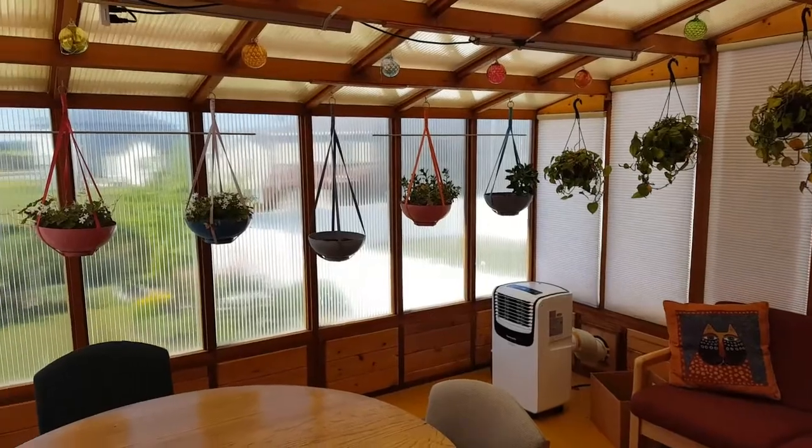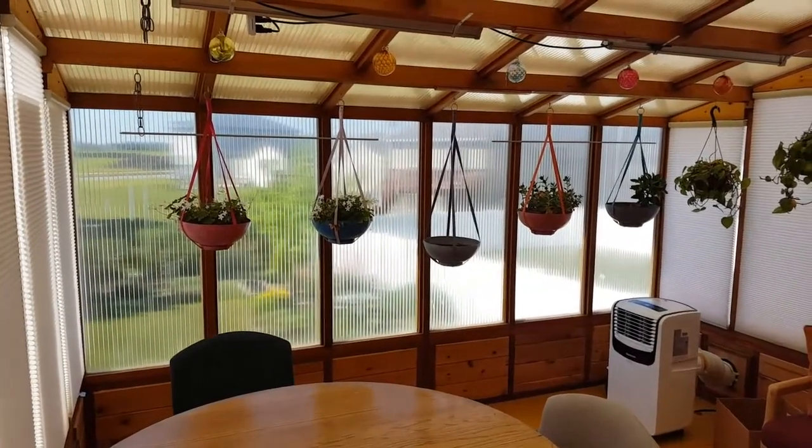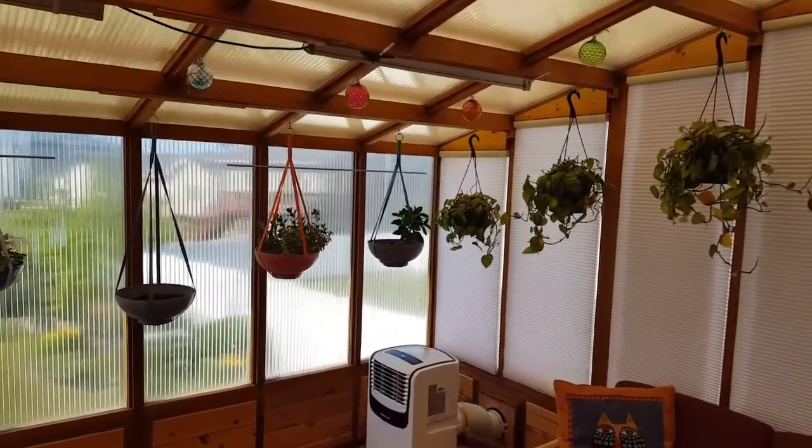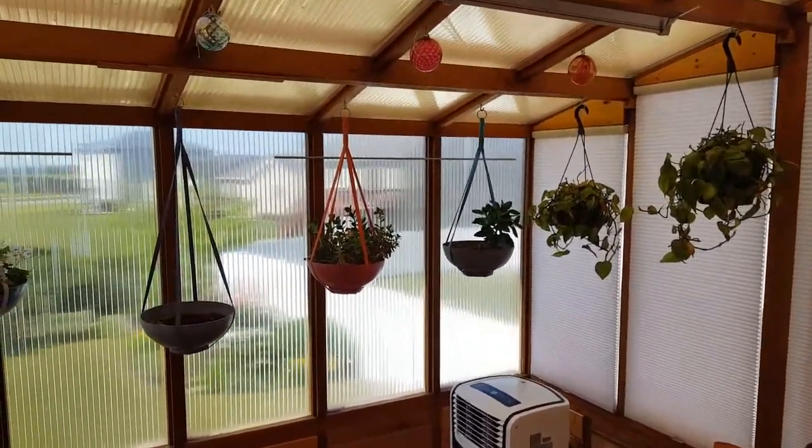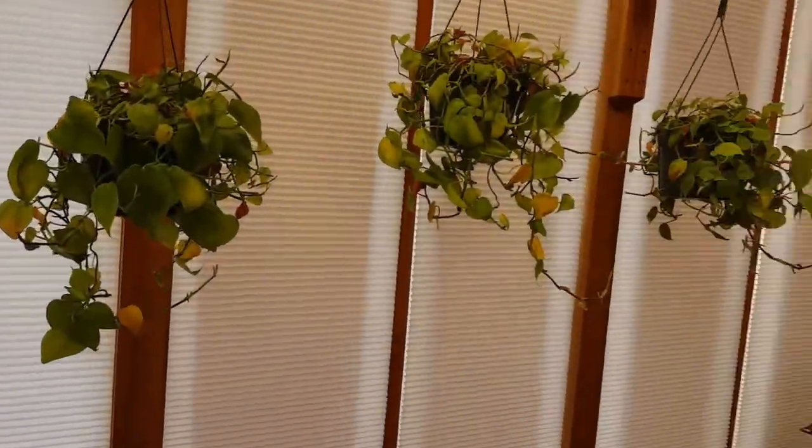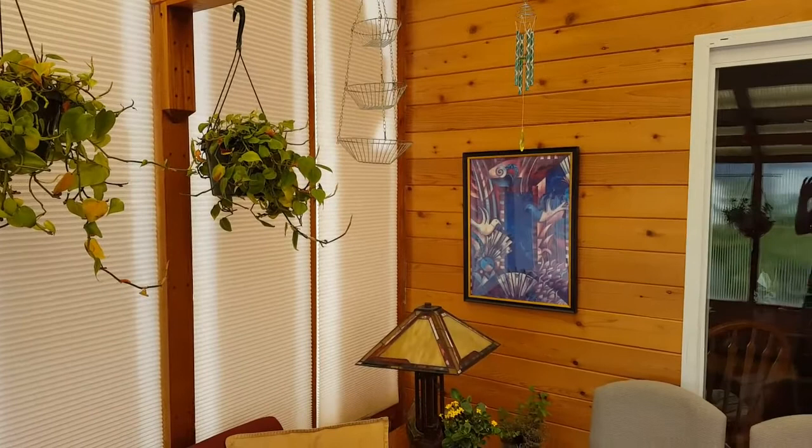So this is what our greenhouse looks like on the inside. It's a 12x12 lean-to where we keep our plants. In the summer, we're able to see our plants on the outside, so it's not quite as necessary. But in the winter, it's really nice to have a nice sunny place where we actually have green and some flowers.